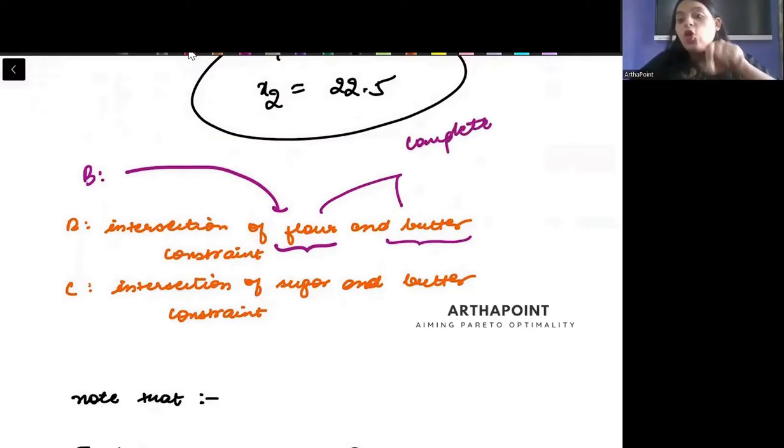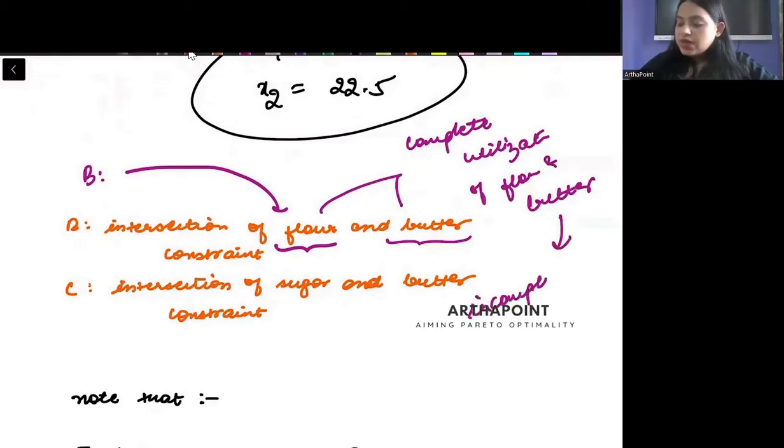It means that you are doing a complete utilization. You are on the line. And on the line means it is an equality. So, complete utilization of flour and butter, and it automatically means that there is an incomplete utilization of sugar.